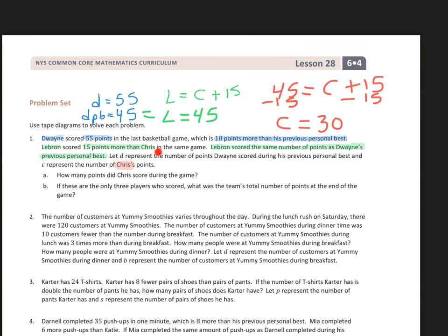I wrote those down just to kind of give me some clarity, and then I moved on. LeBron scored 15 more points than Chris. So I wrote this equation: LeBron is going to be whatever Chris is plus 15, because LeBron is going to be 15 greater than Chris. Then it gave me more information and said that LeBron scored the same number of points as Dwayne's previous personal best, which I already found out was 45. So LeBron equals 45.